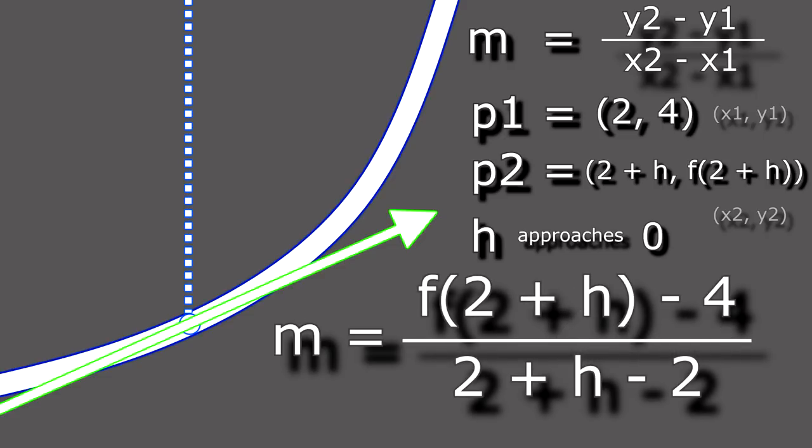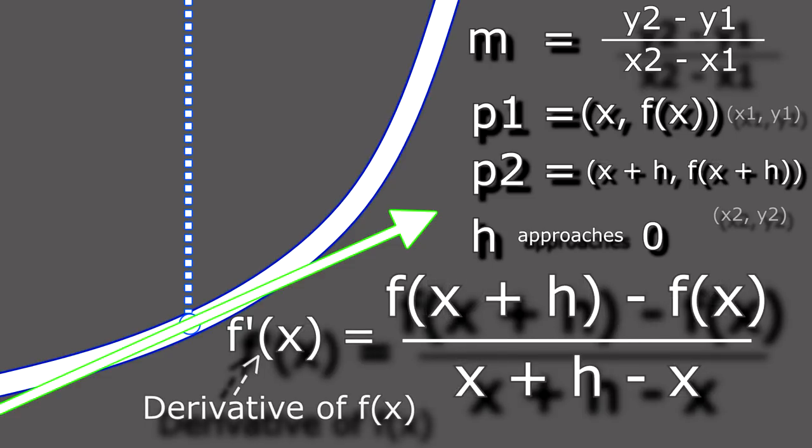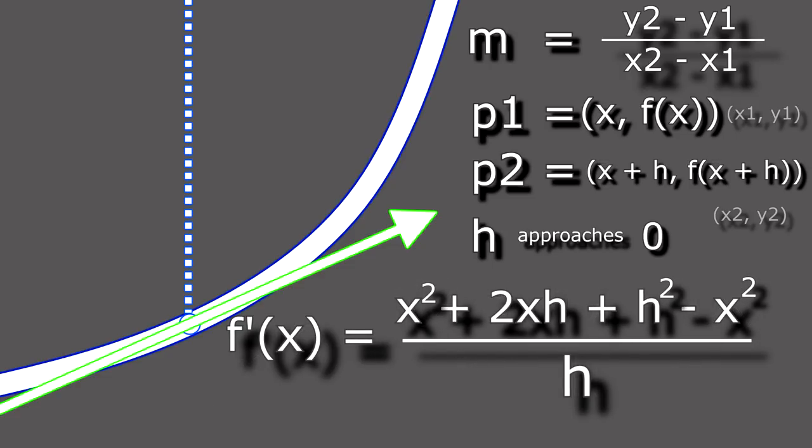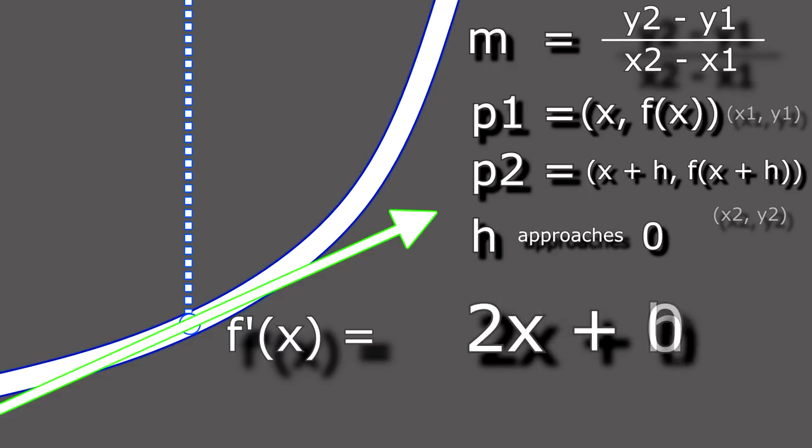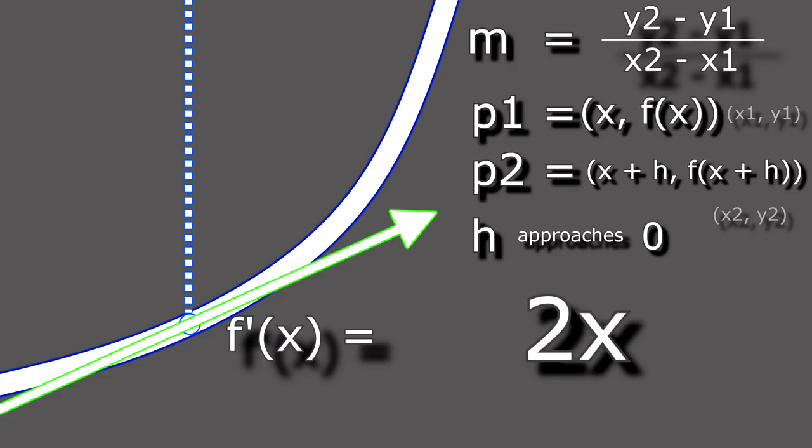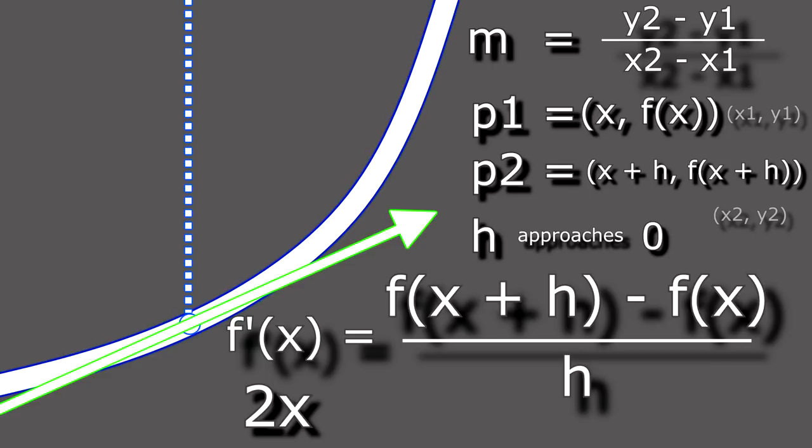But we can do better. Let's replace 2 with x, so we can find the rate of change for x squared of any x value. Do the same thing, and now we can see for any x value in x squared, we just have to take the x value and multiply it by 2. In fact, we can just use this formula to find the derivative for any function when it exists.